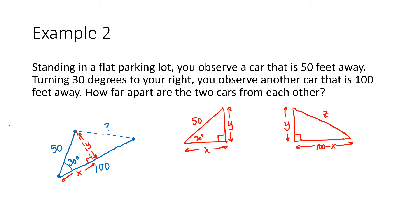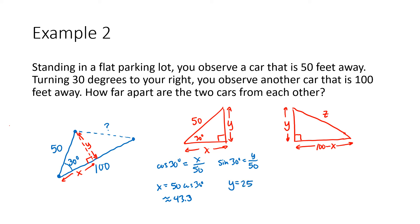Using trig on the first triangle: cosine of 30 degrees equals x over 50, and sine of 30 degrees equals y over 50. Multiplying both sides by 50: x equals 50 times cosine of 30 degrees, which is approximately 43.3. Sine of 30 degrees is one-half, so y equals 25. Now 100 minus x equals 100 minus 43.3, which is 56.7. We know two sides of the second right triangle.